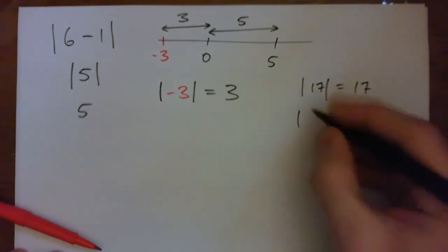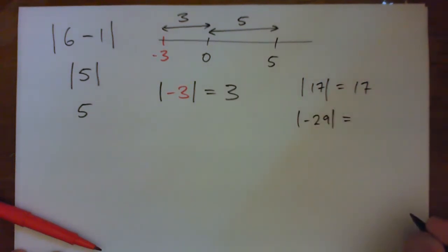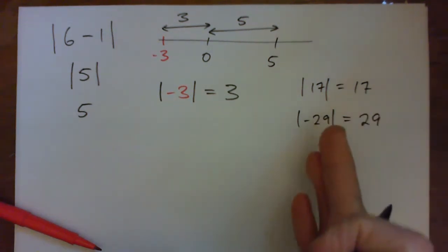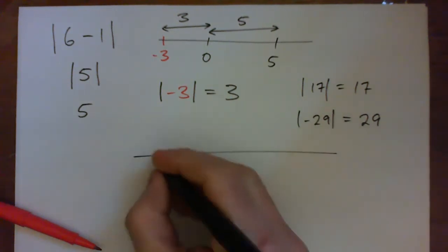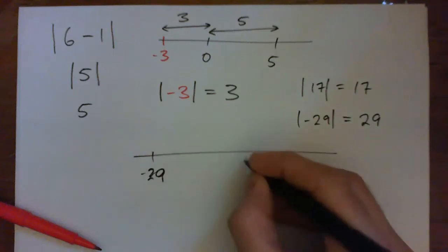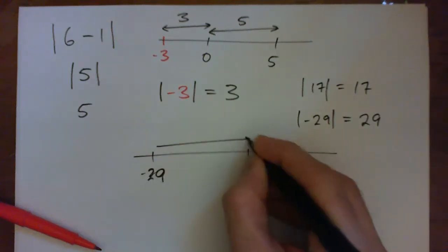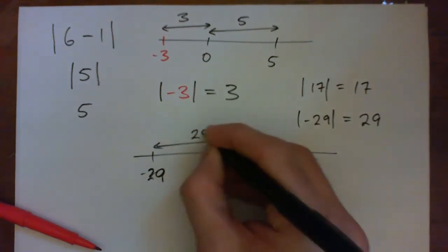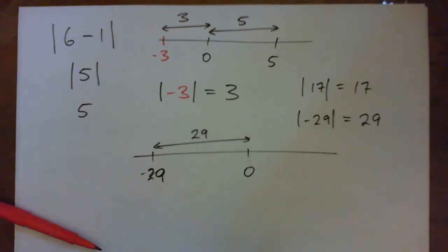The absolute value of negative 29 is, write it down, it's just positive 29. Because it's the distance of negative 29 to 0. Here's negative 29 on the number line. And here's 0. And that distance is 29. It's 29 steps away, 29 units away.